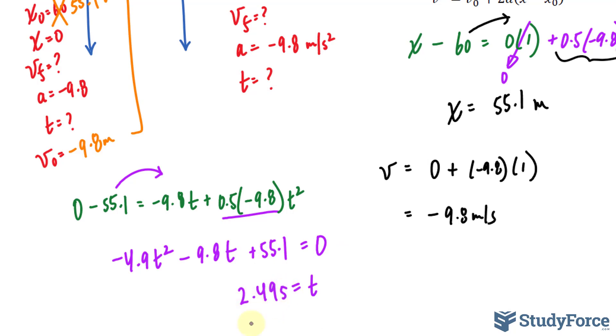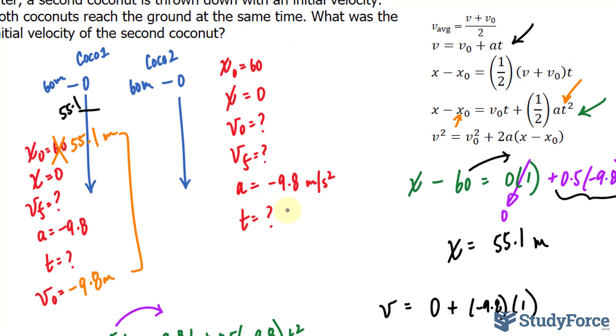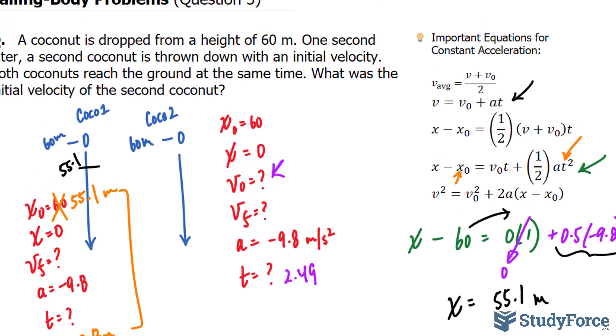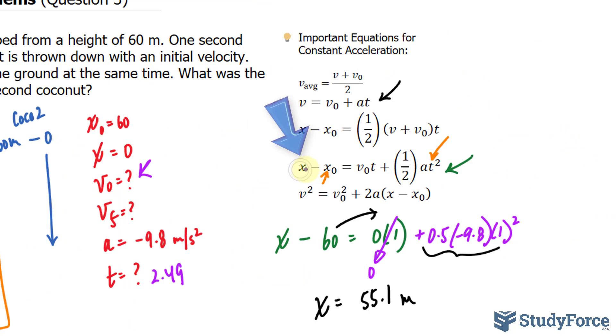And if you want to take into account significant figures, at this point you would have rounded this to 2.5, but let's just keep 2.49. Now if we have t as 2.49 for coconut one, we're looking for this. That's our goal. So what formula takes that into account? We can use this one.